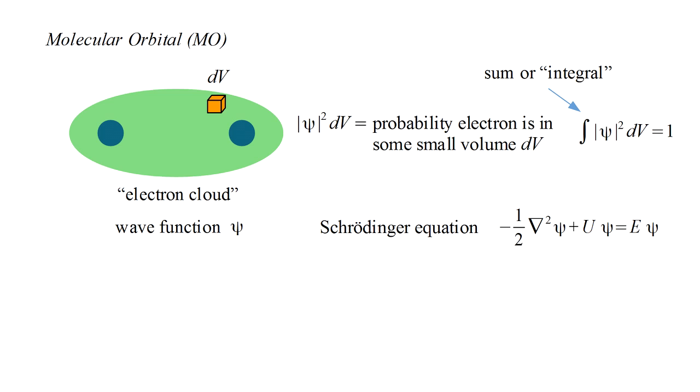The Schrödinger equation has three terms. The first is minus one-half times the Laplacian operator applied to the wave function. As we described in video five, the Laplacian operator is simply a measure of the difference between the wave function at a point and the average value of the wave function on a small sphere surrounding that point. The second term is the potential energy U times the wave function. This is where the specific geometry of the molecule enters the equation. The third term is the total energy E times the wave function. Schrödinger's equation must be solved for both E and the wave function ψ.